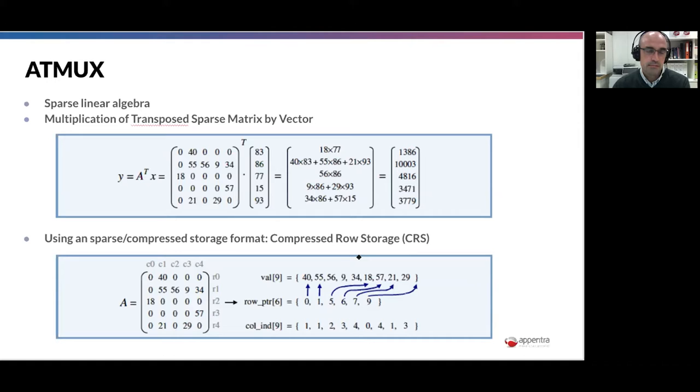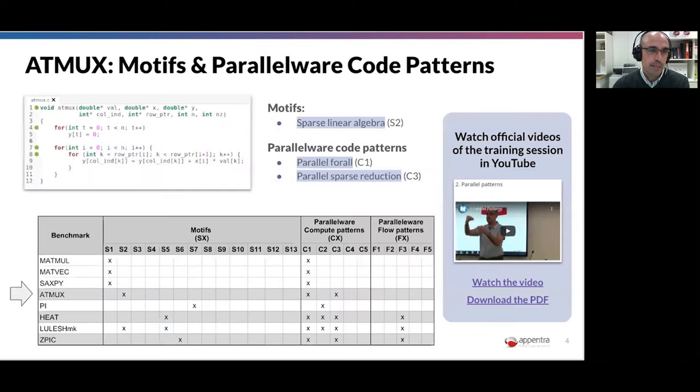With this sparse linear algebra example ATmax, if you remember, it's one of the examples we started with at the beginning of today. In terms of motif, it is sparse linear algebra. In terms of compute patterns, it has a for-all pattern and a sparse reduction pattern. It's very simple, just one invocation of this ATmax routine. You can see the code here.